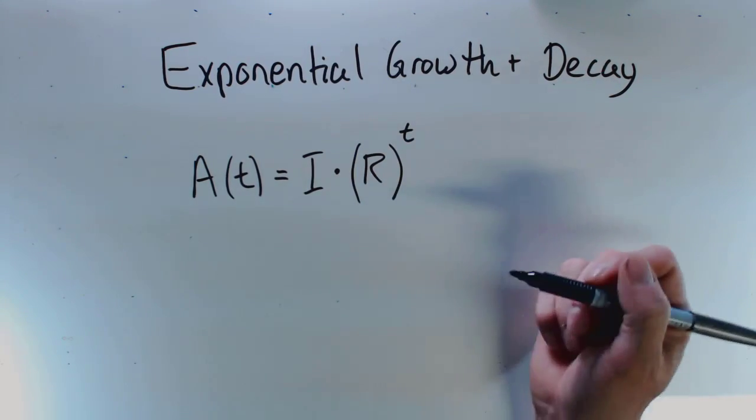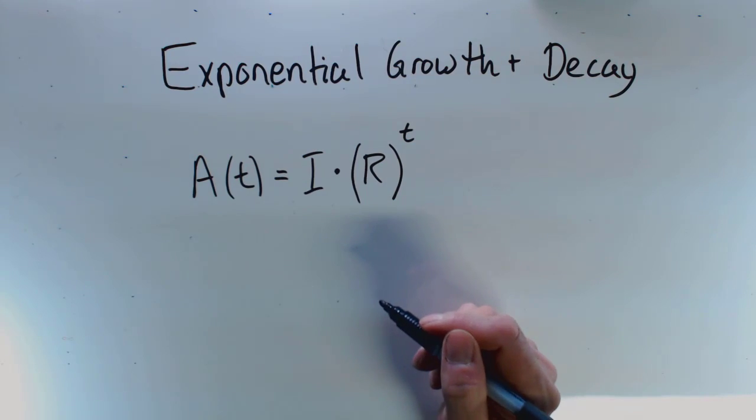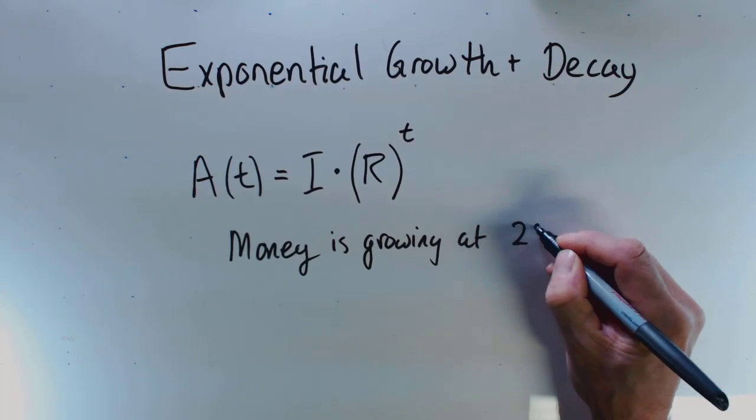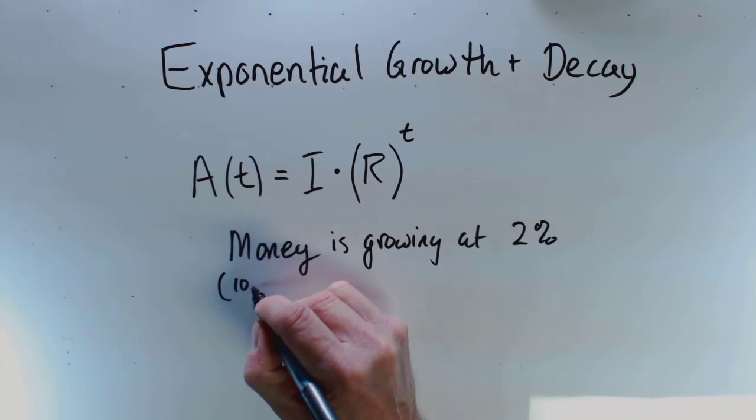For example, let's say money is growing at 2% and let's say it's $10,000.